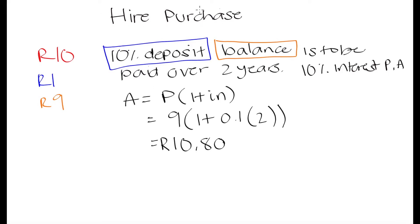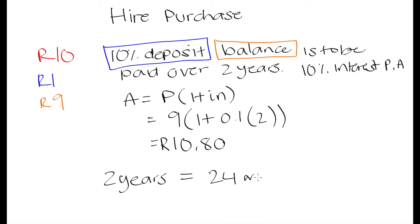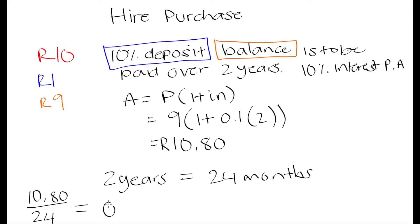The way hire purchase agreements usually work is that you pay back the amount you owe — in this case R10.80 — in monthly installments. So you don't pay it back in total at the end of 2 years; you pay it back in monthly installments over that period. Since 2 years equals 24 months, to calculate how much you pay per month, you take R10.80 and divide it by 24. That gives you R0.45, so you are going to have to pay back 45 cents every month for 2 years.